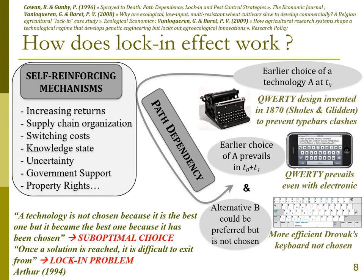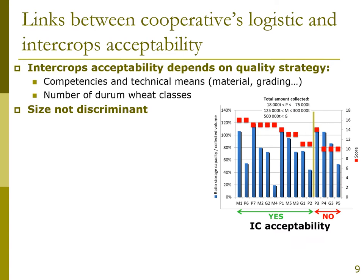To summarize: a technology is not chosen because it is the best one, but it becomes the best one because it was chosen earlier — the clear example of the QWERTY keyboard. Once a solution is entrenched, it is more or less difficult to exit from. This reveals what we call the lock-in problem. In the case of intercrops, one key factor is commercialization and the fact that many collectors don't accept crop mixtures.